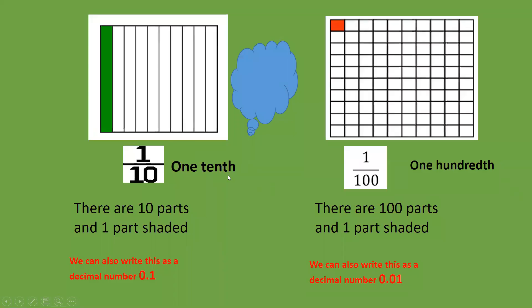The diagram shows us tenths again, and it says one tenth. There's ten parts in total and one part shaded. We can write that as a decimal number, which is 0.1. On the right, we've got one hundredth. There's a hundred parts in total, which we can see in the denominator. And on the top, the numerator is one, so one one hundredth. We can also write that as a decimal number, which is 0.01. I can see, if I look closely, that one tenth is a larger amount than one hundredth.